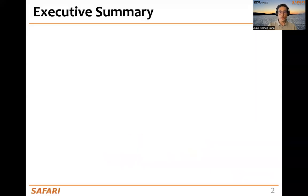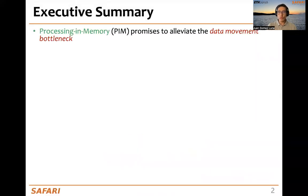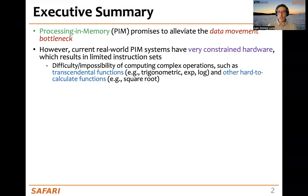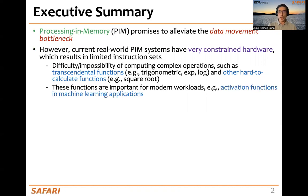Let's start with an executive summary. Processing in-memory promises to alleviate the data movement bottleneck. However, current real-world PIM systems have very constrained hardware, which results in limited instruction sets. This causes the difficulty or even the impossibility of computing complex operations such as transcendental functions and other hard-to-calculate functions such as square root. These functions are important for modern workloads, for example, activation functions in machine learning applications.